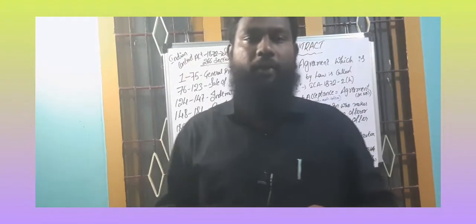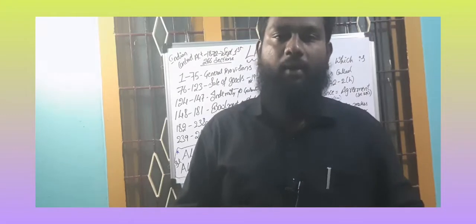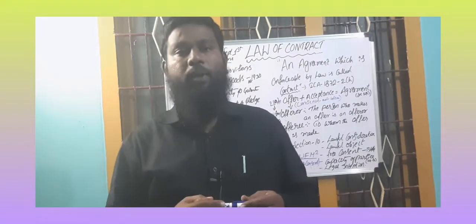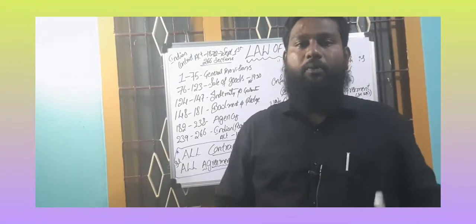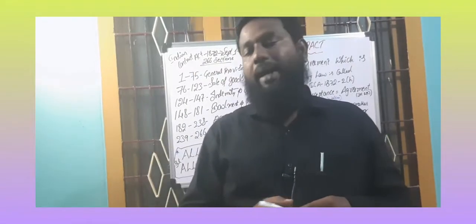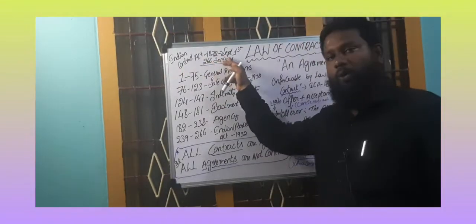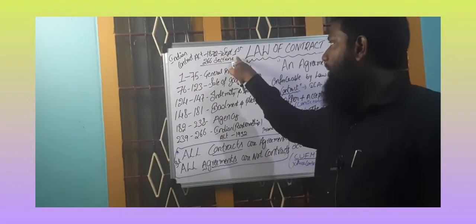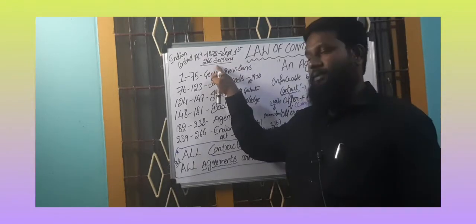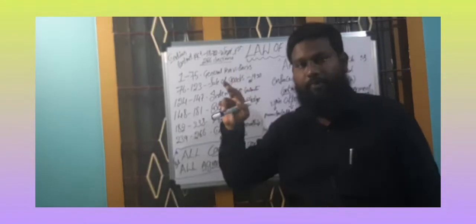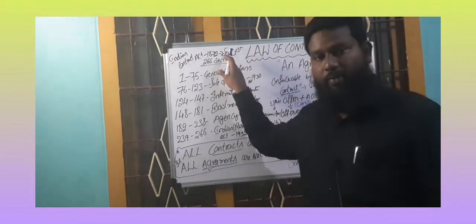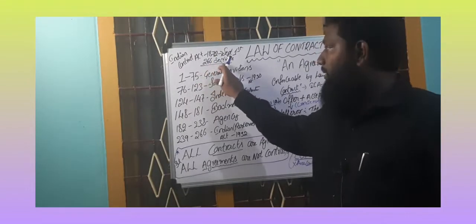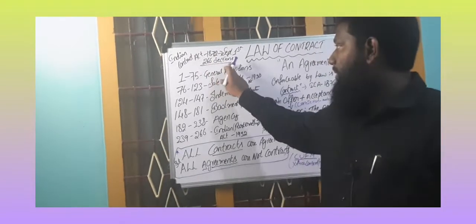In this video I am going to explain the introductory part of the Law of Contract — when it came into force and what sections it contains. The Indian Contract Act 1872 came into force on September 1st. Please note the correction: it came into force with 266 sections.